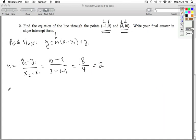Alright. So, y equals 2 times the quantity x minus what? Well, I can pick either point to use on the line. I'm just going to pick negative 1 comma 2.